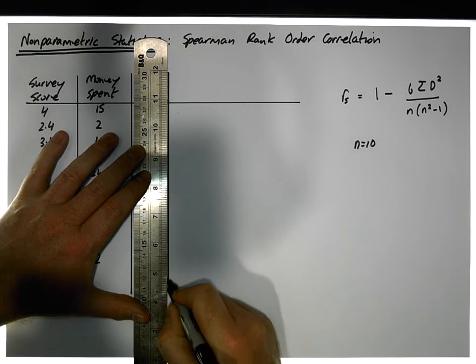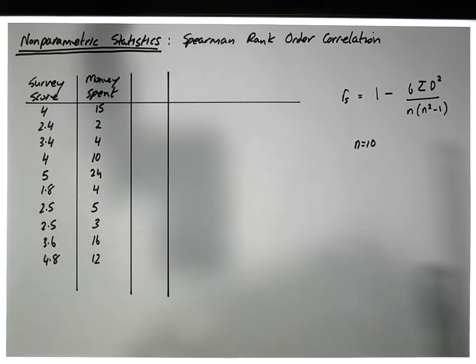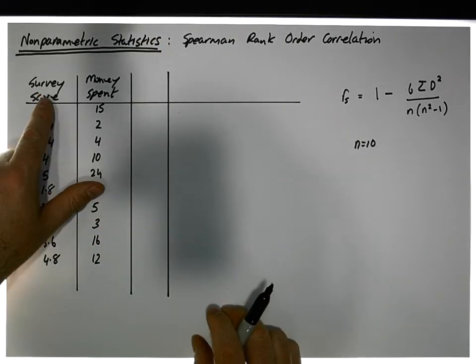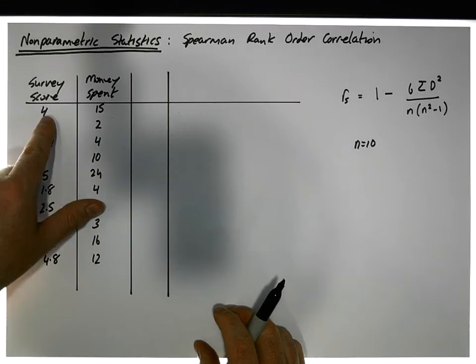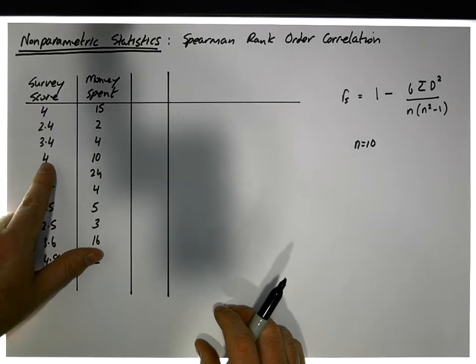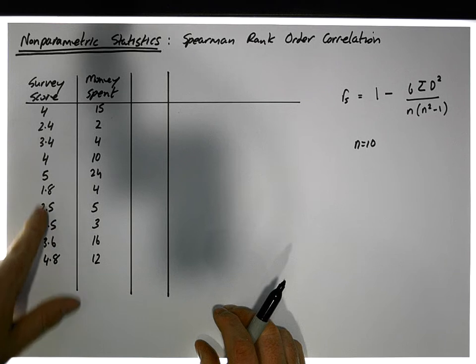Now we have to be careful in case there are paired observations, in case there are observations that repeat. For example, in the survey score variable, you can see that 4 occurs here, and also here, and also any other repeating values.